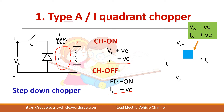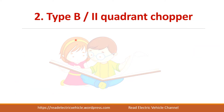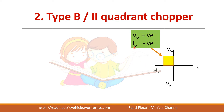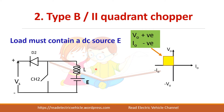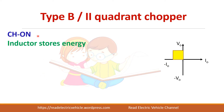Next is Type B, or the second quadrant chopper. In the second quadrant, voltage is positive whereas current is negative. For current to be negative, it should flow out of the load — from the load to the source. For this, the load must have some energy source like a battery or a back EMF. So we connect a battery or back EMF so that the load can supply current to the source.